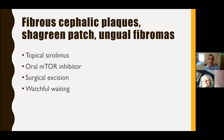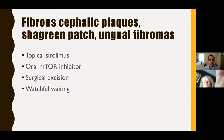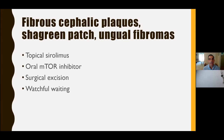Moving on to fibrocephalic plaques, shagreen patch, and ungual fibromas: topical sirolimus and oral mTOR inhibitors are both useful. Surgical excision can be applied especially for smaller lesions in the right area. Sometimes watchful waiting is appropriate — a shagreen patch often doesn't cause much trouble and can be left, as they often stay the same or become less evident over time.